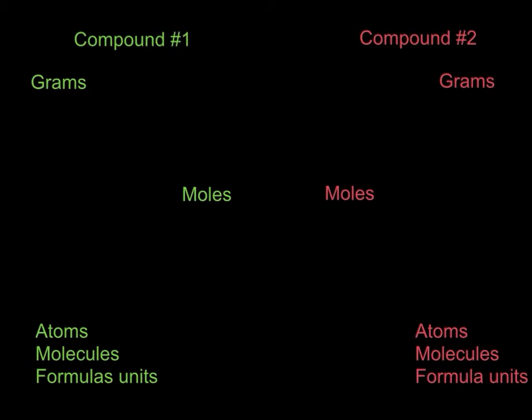Here are the basics on how to use a mole map. With the mole map, we're using it to solve a stoichiometry problem where we're talking about two different compounds. These compounds can be anything from one reactant to one product, from one reactant to another reactant, from one product to another product. It really doesn't matter as long as you're using two different compounds.